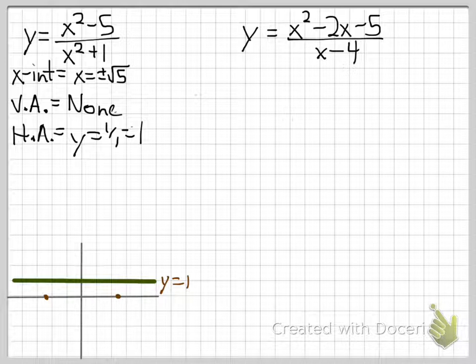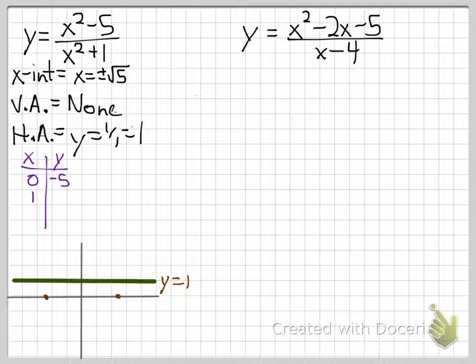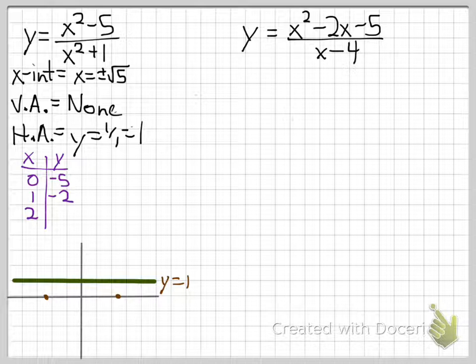We draw the horizontal asymptote at y equals 1. The x-intercepts are at plus or minus the square root of 5, approximately plus or minus 2.2. Since there are no restricted x values, we can pick any points to plug in. Starting with x equals 0 gives negative 5 over 1, which is negative 5. Plugging in x equals 1 gives negative 4 over 2, which is negative 2. Plugging in x equals 2 gives (4 minus 5) over (4 plus 1), which is negative 1 fifth, or negative 0.2.